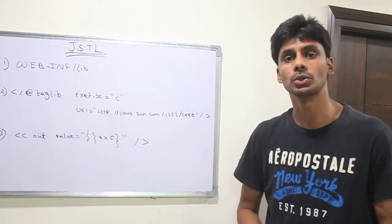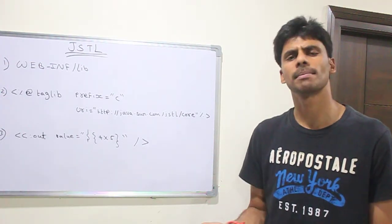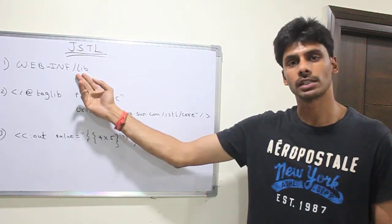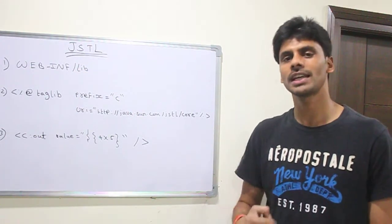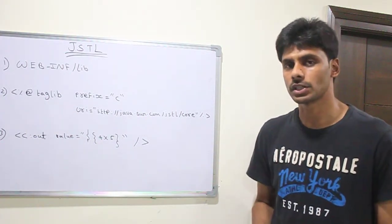In our taglib descriptor file which is an XML file, .tld file, which will be there in these jar files when JSTL provides. So when we create our custom tags, we provide TLD etc., which we will learn in the custom tag presentation.